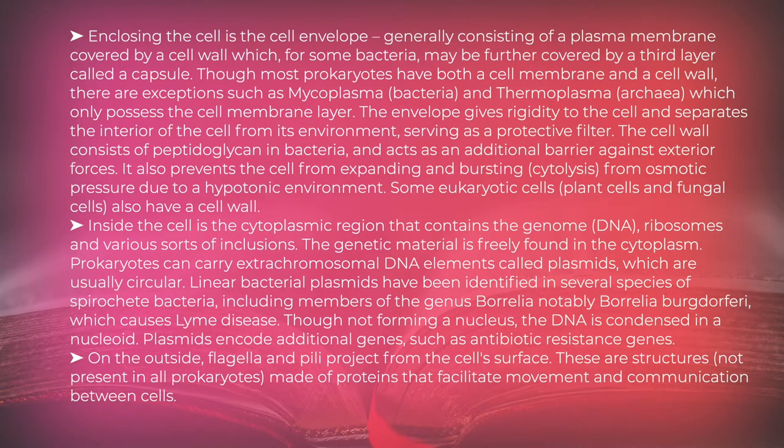A prokaryotic cell has three regions. Enclosing the cell is the cell envelope, generally consisting of a plasma membrane covered by a cell wall which, for some bacteria, may be further covered by a third layer called a capsule.